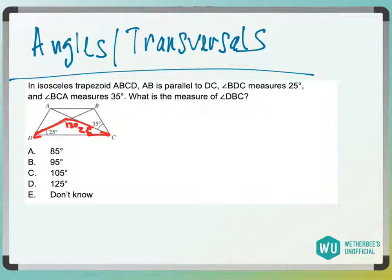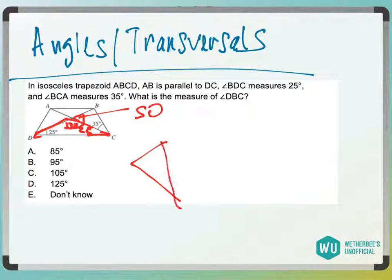Now for this, this to this is a line. So if this is 130, this measure here has to be 50. Now I have a triangle, let me just pull that out so you can see a little better.